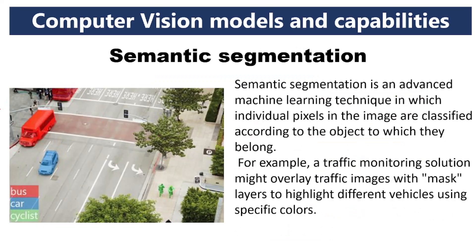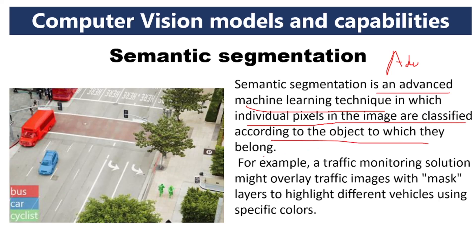Next is semantic segmentation. Semantic segmentation is an advanced machine learning technique in which individual pixels in the image are classified according to the object to which they belong. The buses are shown in red color, the car in blue color, and the cyclists in green color — each individually classified according to the object.